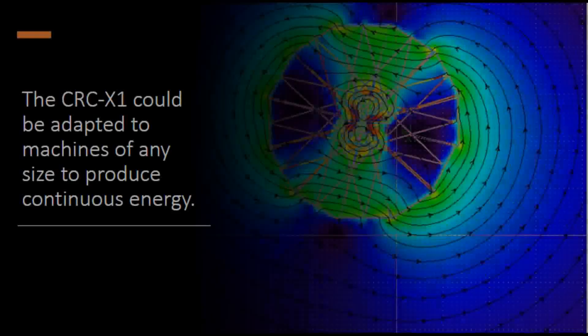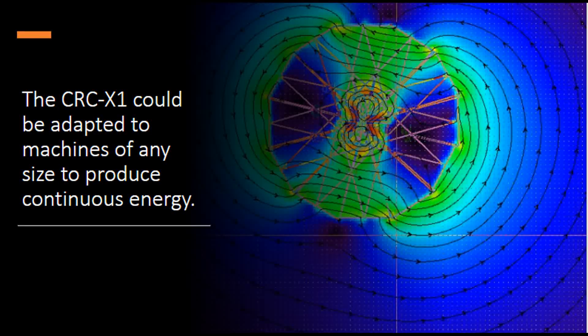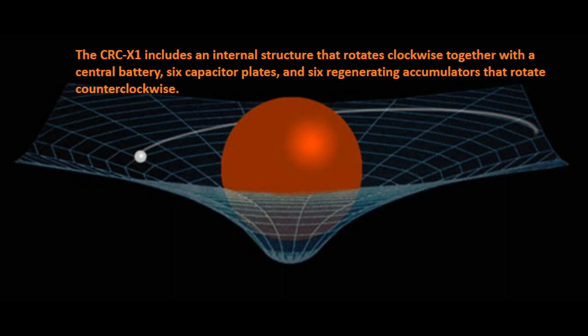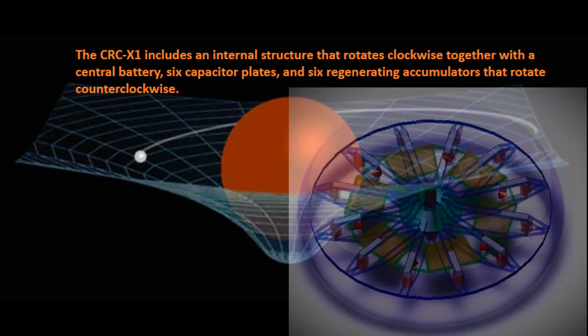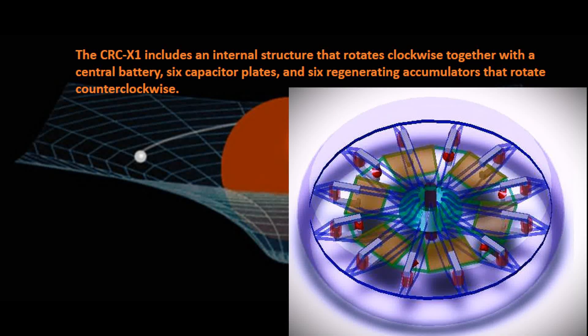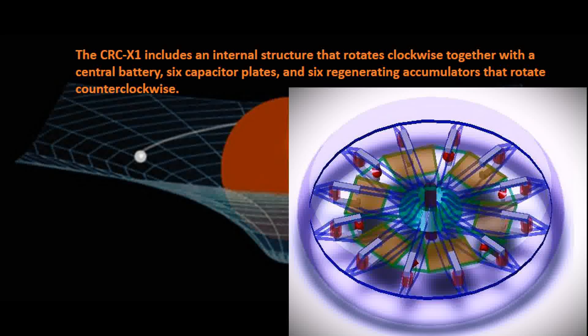The CRC-X1 could be adapted to machines of any size to produce continuous energy. The CRC-X1 includes an internal structure that rotates clockwise together with a central battery, six capacitor plates, and six regenerating accumulators that rotate counterclockwise.